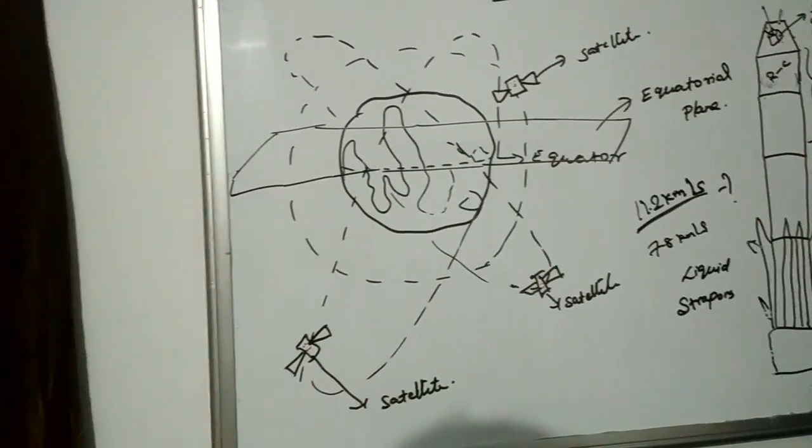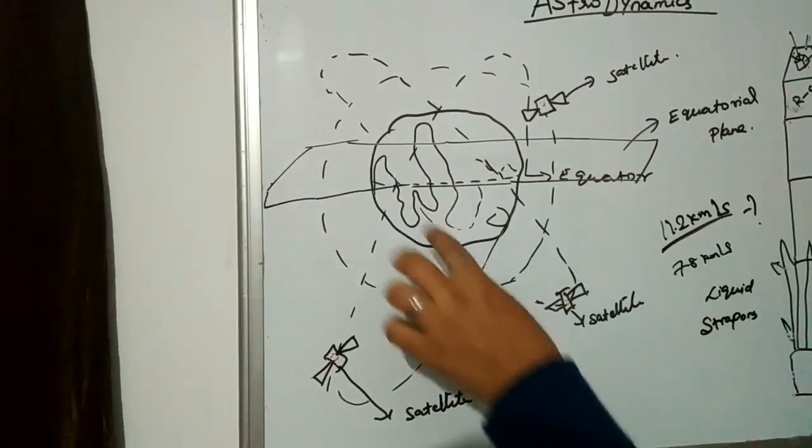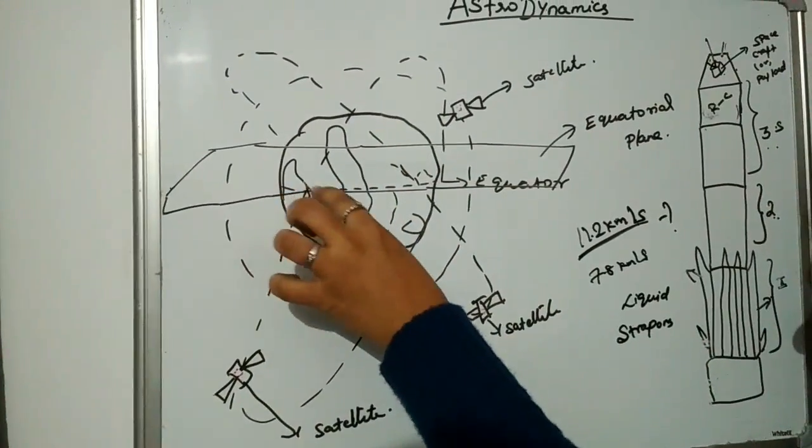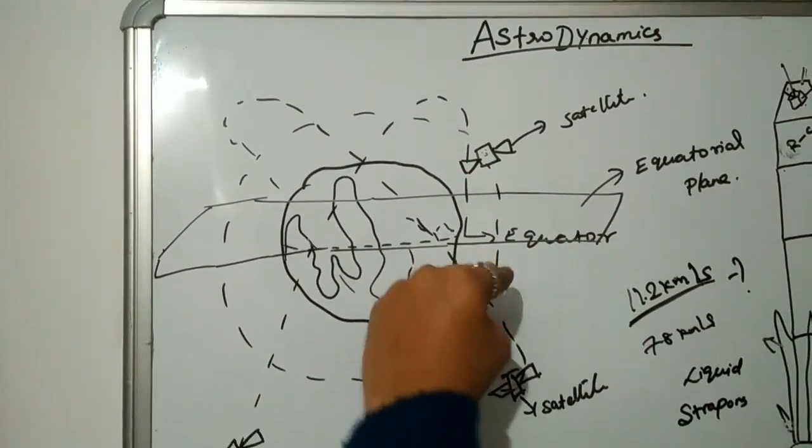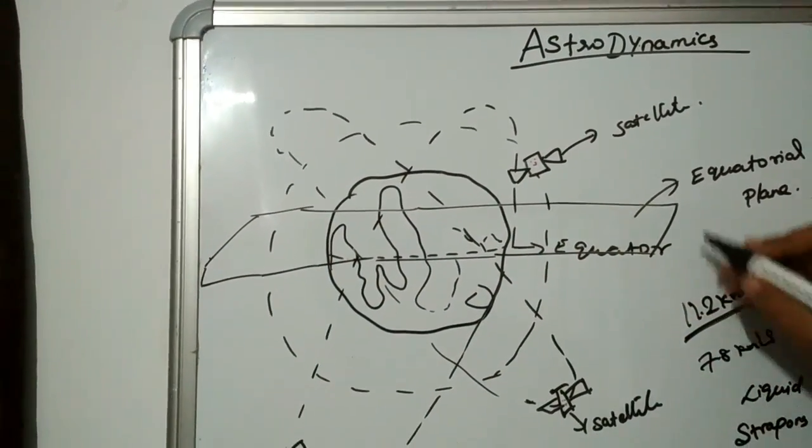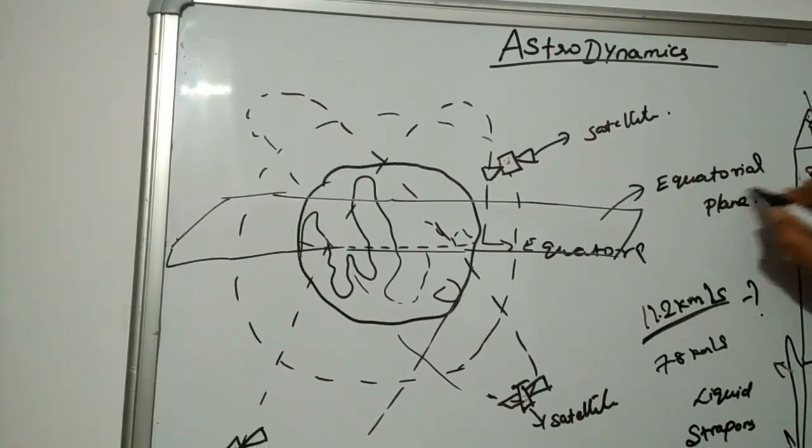This is our Earth. Before getting into our subject, let's learn about the equator. If you place a plane over the equator, that is known as the equatorial plane. This is very important while designing the orbital path.